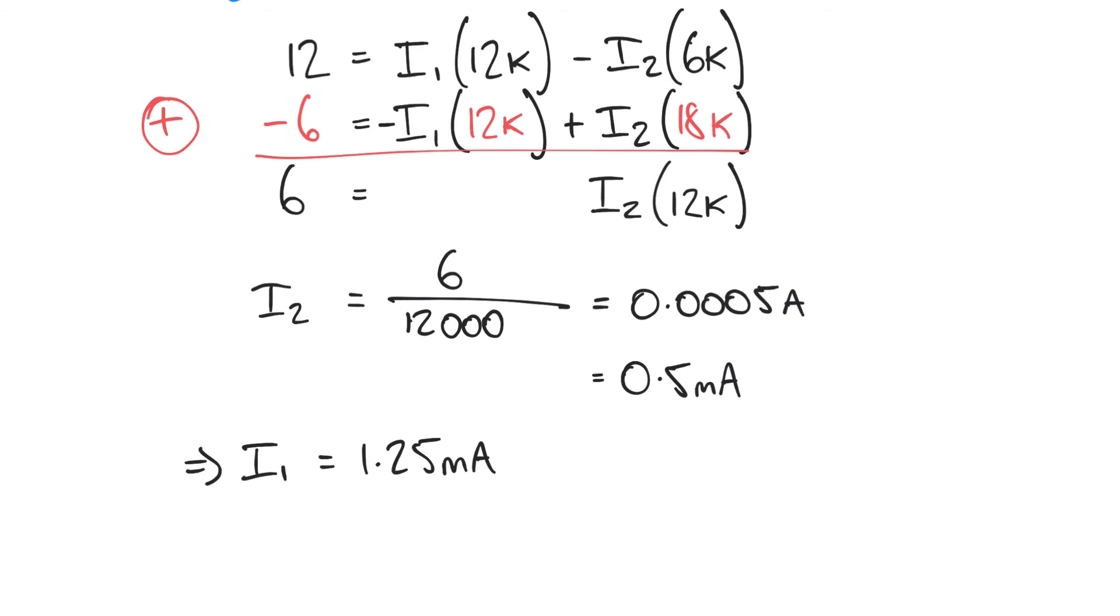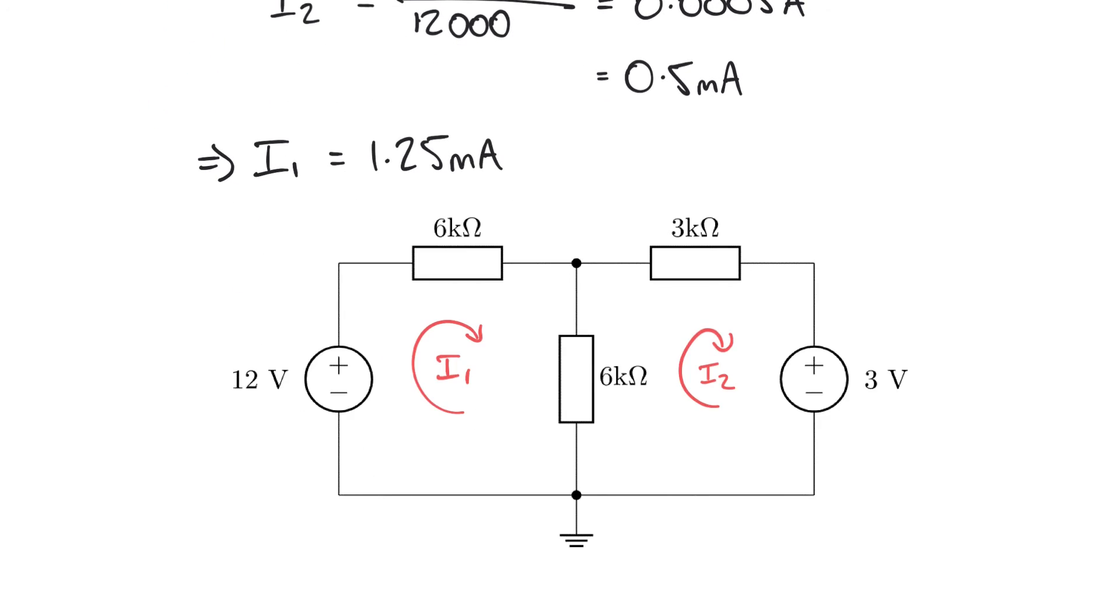So now we've found the values of these currents I1 and I2, these mesh currents. And to be honest, on their own, they don't really mean all that much. We've just made up these currents I1 and I2. We've drawn these clockwise currents in and we've found their values. Let's suppose that we're asked to find the current that flows through each of these resistors here.